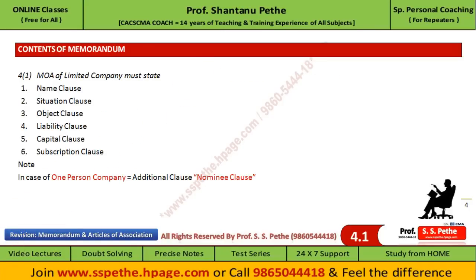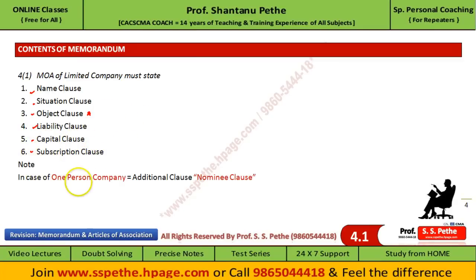Now let's see what are the contents of Memorandum. There are mainly six clauses. First, the name clause — name of the company. Second, the situation clause — the registered office and the state in which it is located. Third, the object clause — what activities the company can carry out. Fourth, the liability clause — whether liability of members is limited or unlimited. Fifth, the capital clause — the structure of share capital. And lastly, the subscription clause, signed by the subscribers. In case of a one person company, there is an additional nominee clause, where the sole member gives the name of the nominee.